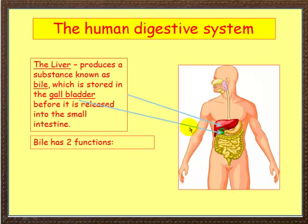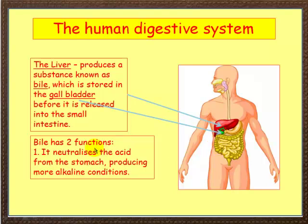Something we bypassed slightly in our travels through the system was the liver. The liver produces a substance known as bile, which is stored in the gallbladder, and this is released into the small intestine. Bile has two functions. First of all, it neutralises the acid from the stomach, producing more alkaline conditions.